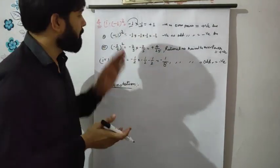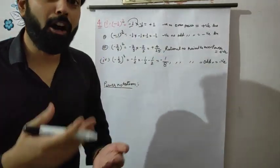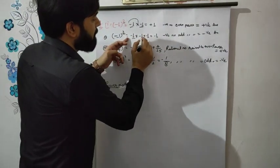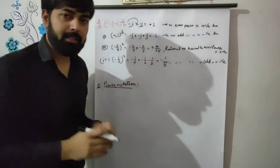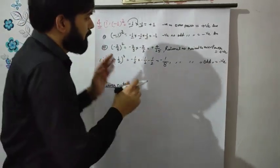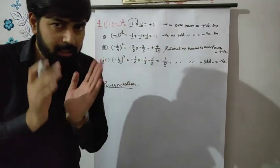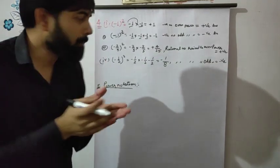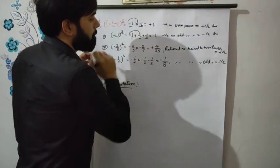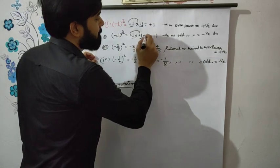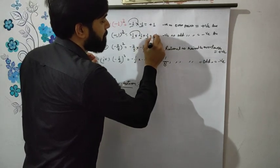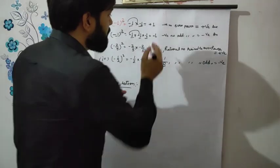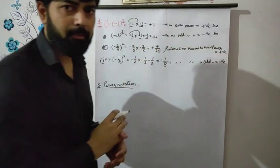Minus 1 to the power 3 means minus 1 multiplied 3 times: minus 1 × minus 1 × minus 1. We have 3 numbers. First multiply 2 numbers: minus × minus = plus, 1×1=1. Then plus × minus = minus, so the answer is minus 1.